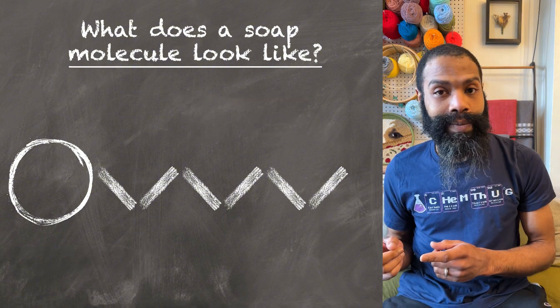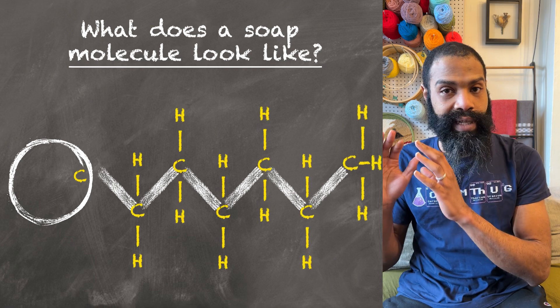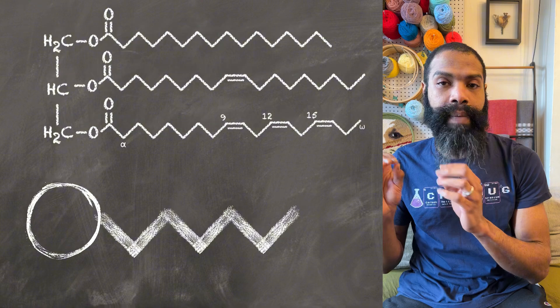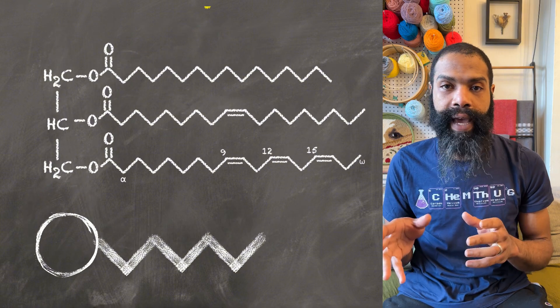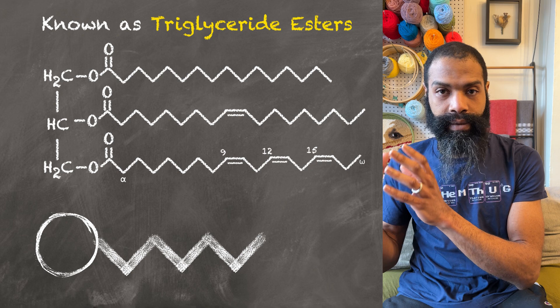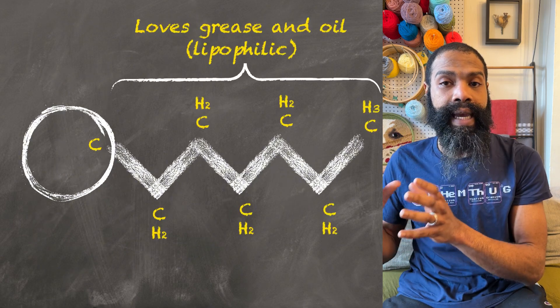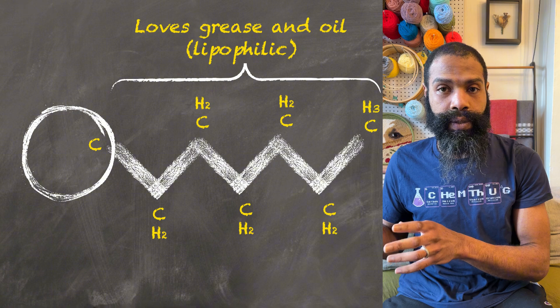So on the one part of this molecule, you got this long group of just carbons and hydrogens and not much else. And it just so happens that the molecules that make up grease and fats and oils like butter and olive oil look like that. They are very similar to that, which means that that part of the molecule can mix with grease and oils when they're present.